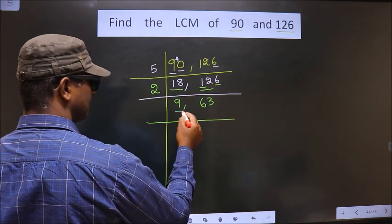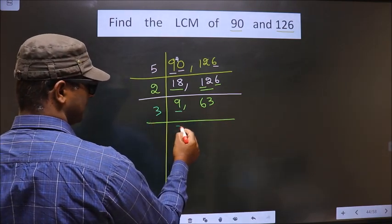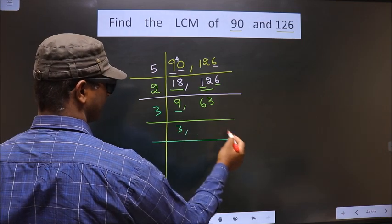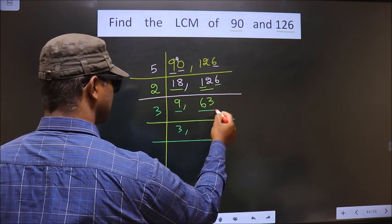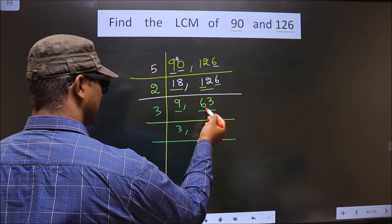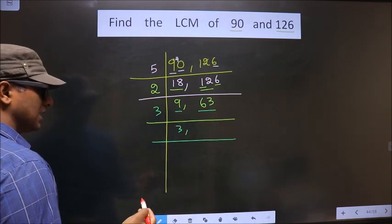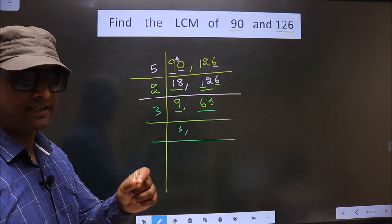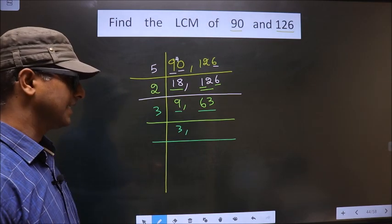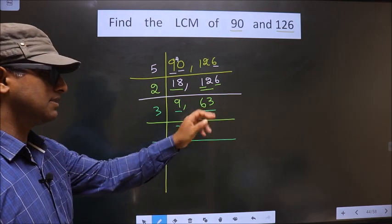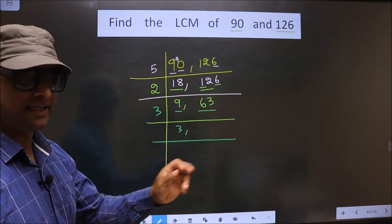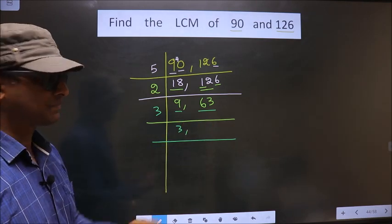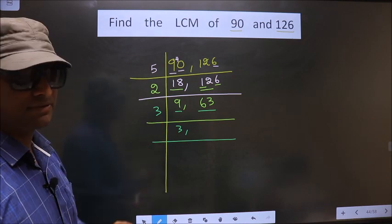Now, here we have 9. 9 is nothing but 3 times 3 is 9. Here we have 63. To check whether this number is divisible by 3 or not, for that we should add the digits. That is, 6 plus 3, 9. Is 9 divisible by 3? Yes. So, this number also divisible by 3.